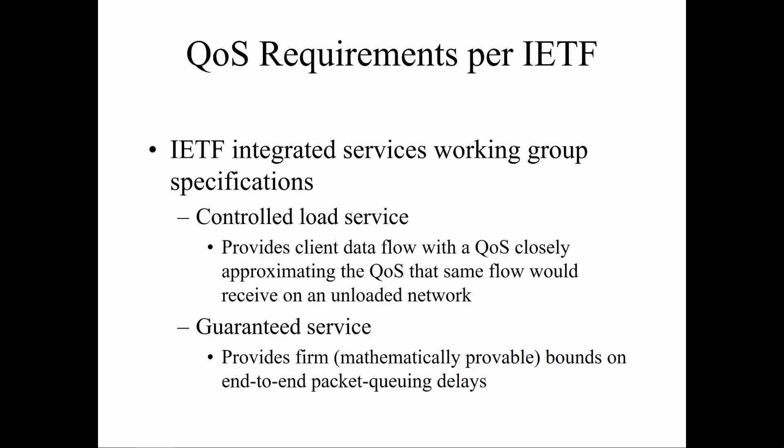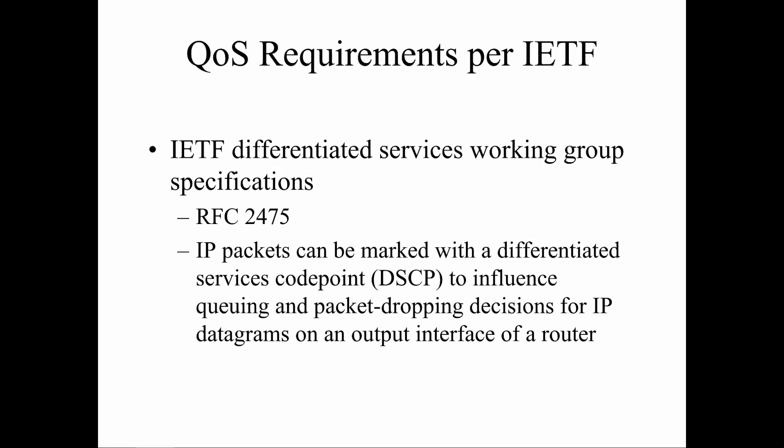We have QoS requirements per the IETF group — that's going to be guaranteed services or controlled load services. If we're doing guaranteed, it will provide a firm mathematical provable bounds on end-to-end queuing, where the controlled load balancing provides client data so you can approximate it. We have to pick and choose what's going to be the right type of tool for our environment. The IETF differentiates services workgroups based off RFC 2475, as well as the way that we can categorize our packets using differentiated service code points, or DSCP, and how that influences queuing and drop decisions for our IP datagrams.